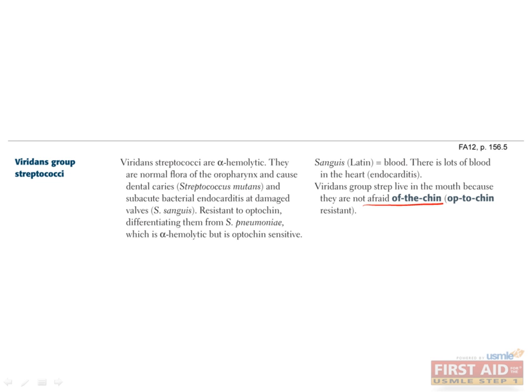Viridans strep can also cause subacute bacterial endocarditis. A possible scenario is after a dental procedure when manipulation of the mouth with invasive tools can cause viridans strep to enter the bloodstream. Viridans strep can then travel through the blood and seat itself onto your heart valves. This is most likely to occur if your heart valves are already damaged — for example, if you had rheumatic fever or prior heart surgery.